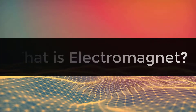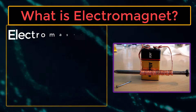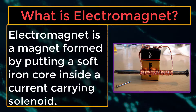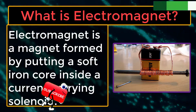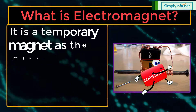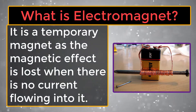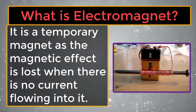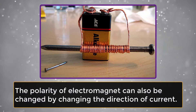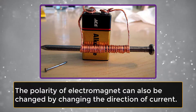What is an Electromagnet? An electromagnet is a magnet formed by putting a soft iron core inside a current-carrying solenoid. It is a temporary magnet, as the magnetic effect is lost when there is no current flowing into it. The polarity of an electromagnet can also be changed by changing the direction of the current.